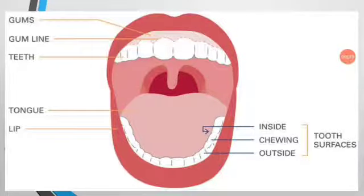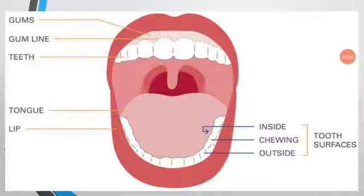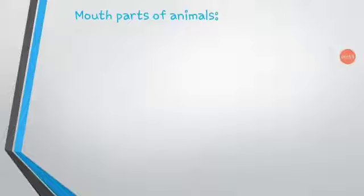Children, do you know the parts in your mouth? In the mouth they have lips, tongue, and teeth. Do you know the uses of teeth? They cut and chew the food. Do all the teeth have the same size and shape? The teeth have different shapes and sizes based on their function. Today we will learn more about these mouth parts of the animal.